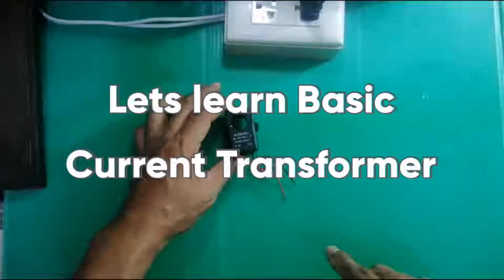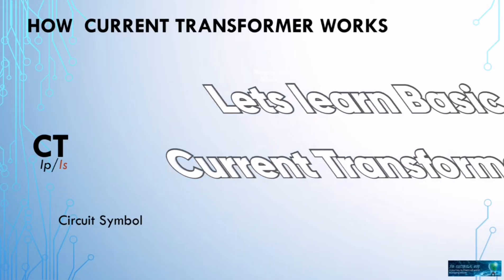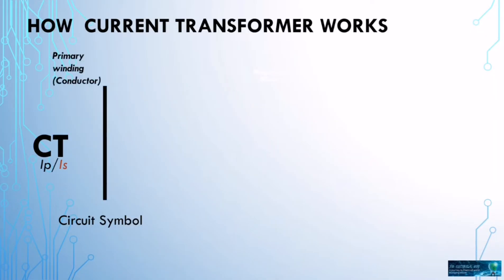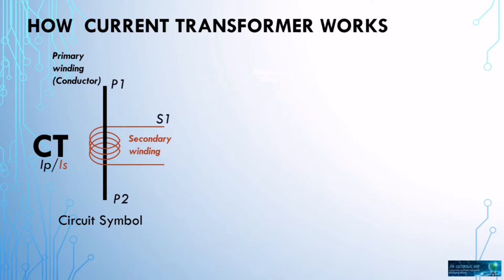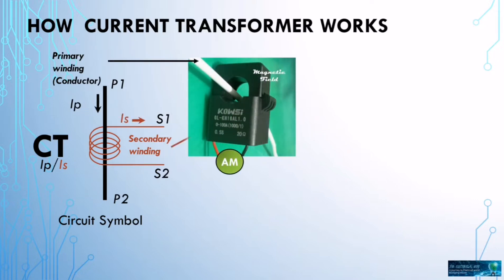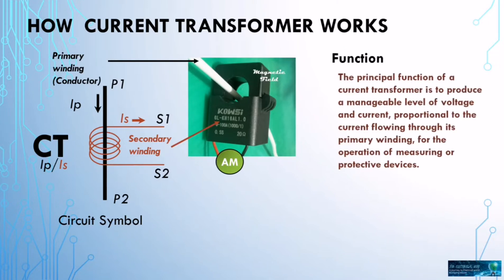Let me discuss first the basics of current transformers before we proceed with the test and installation. The principal function of a current transformer is to produce a manageable level of current in the secondary winding proportional to the current flowing through its primary winding, for the operation of measuring and protection devices.